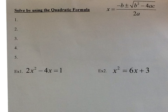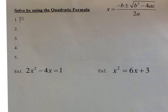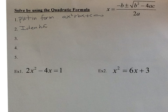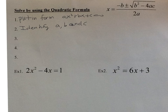Now let's flip it over to work on the quadratic formula. The quadratic formula is x equals negative b plus or minus the square root of b squared minus 4ac, all over 2a. This must be memorized — it will not be given to you on your final exam or your test. Always put the quadratic in standard form: ax squared plus bx plus c equals 0, then identify a, b, and c. Note that with the quadratic formula, a does not have to equal 1.